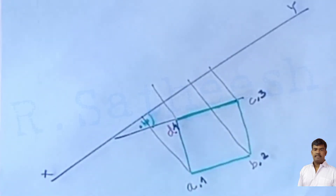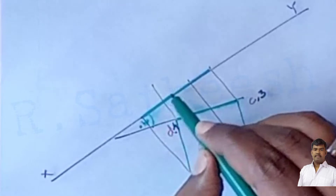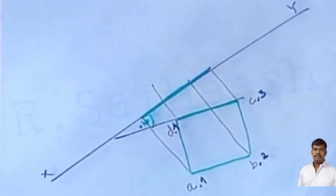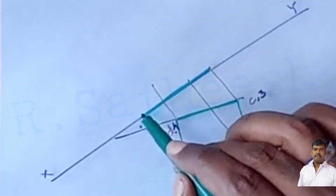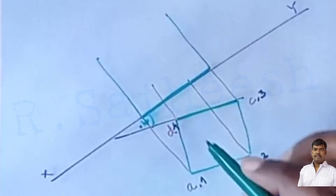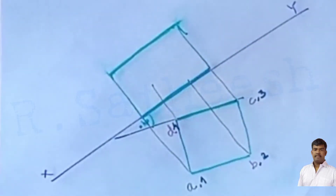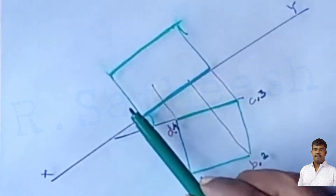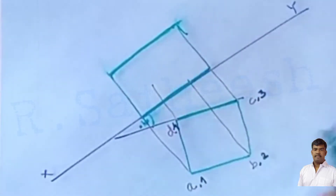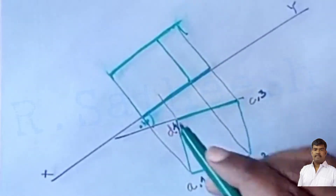Since the cube's base rests on the HP, the front view appears as a rectangle. Because the cube is slightly inclined to the VP — two vertical faces are not fully parallel — the front view appears as a rectangle, not a square. The height is 30 mm. Edges a1 and c3 are visible, edge b2 is also visible, and edge d4 is invisible.